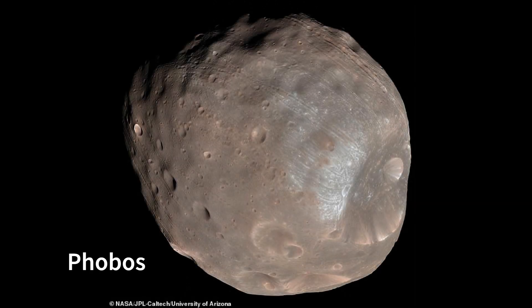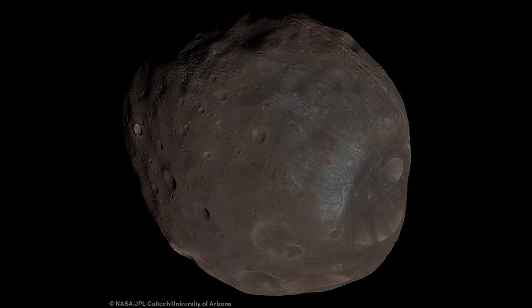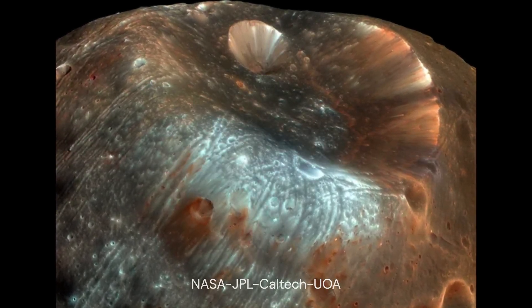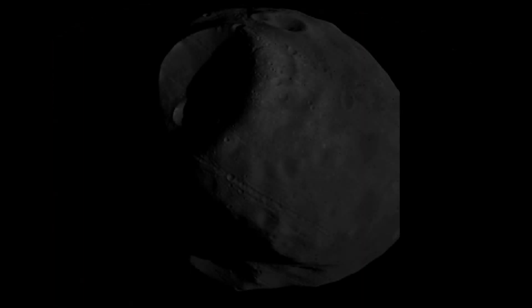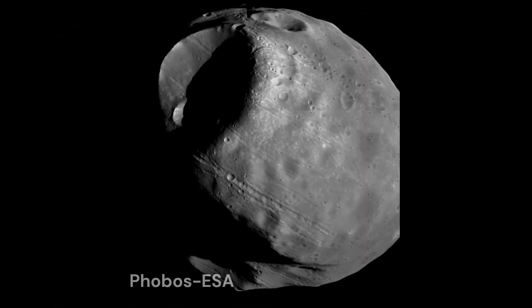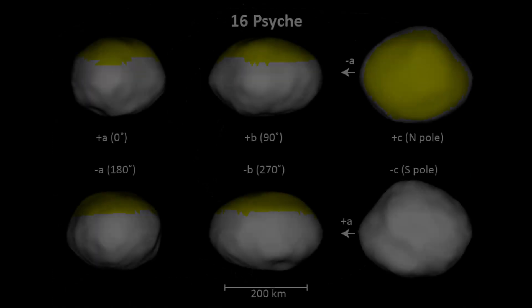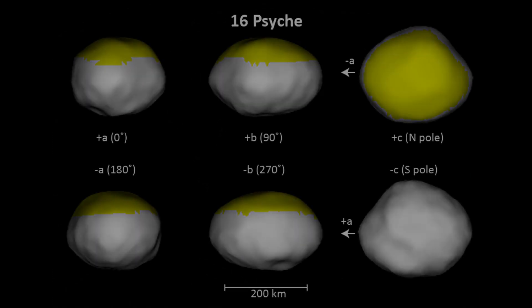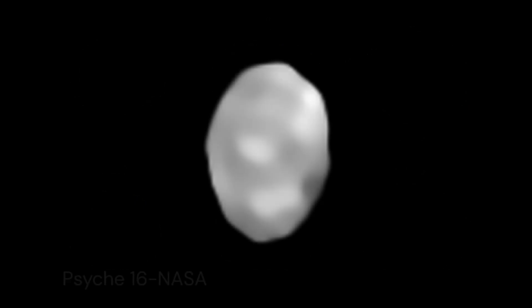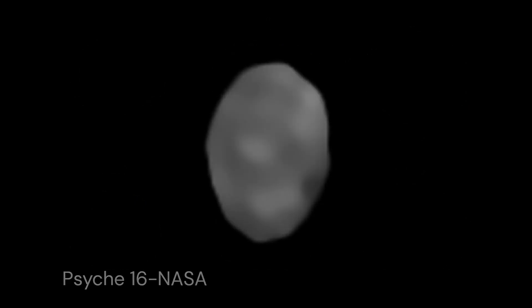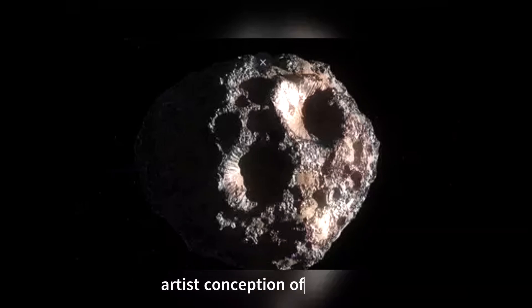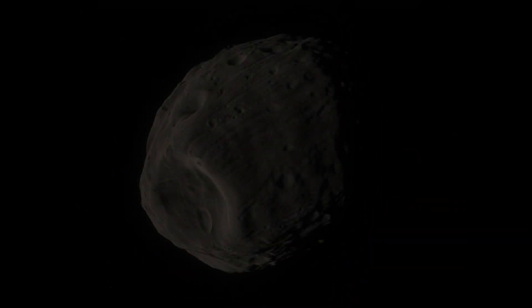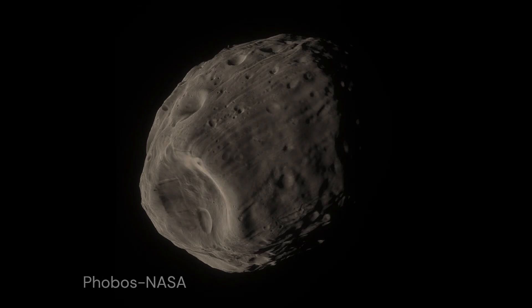These bodies are the Psyche asteroid and Mars' moon Phobos. We have already seen Phobos up close, so we can make observations of existing images. On the other hand, we have not been to the Psyche asteroid, but NASA currently has a mission en route to this rock, which gives us some room to make predictions about what its surface may look like if it's been scarred electrically. Both bodies have different compositions, and therefore electrical scarring will have a different effect on each body as we will see when we uncover the interworkings of electrical theory.